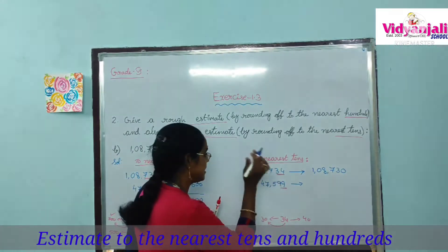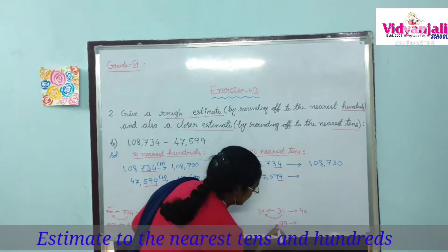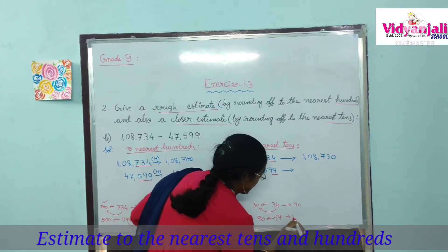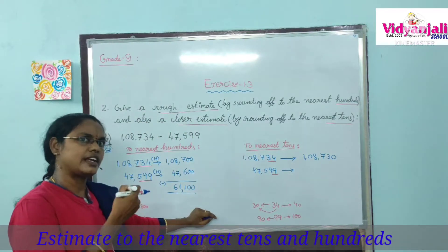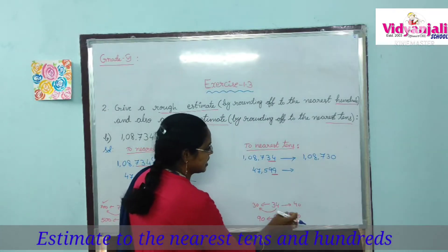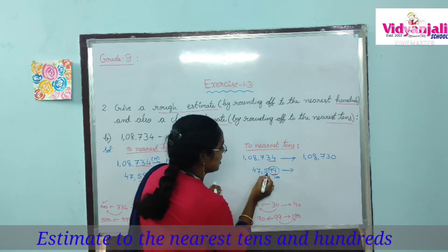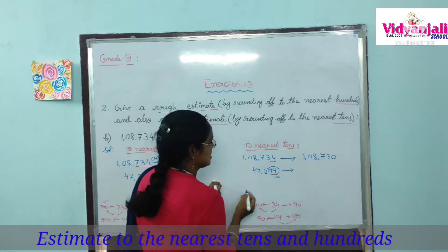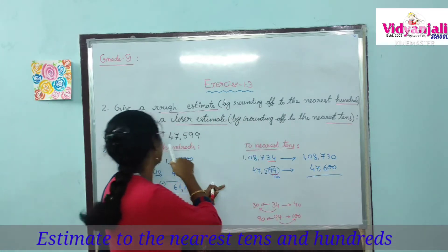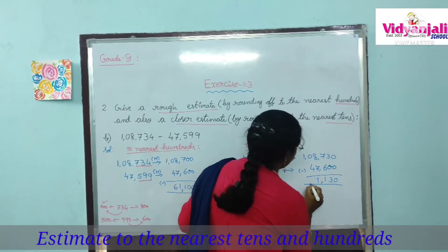In the second number, we have 99 in the tens place. Now, 99 lies between 90 and 100, and it is near to 100. So we replace 99 with 100. Since we already have 5 in the hundreds place — 500 plus 100 gives 600 — the second number becomes 47,600. Now subtract to find the difference.